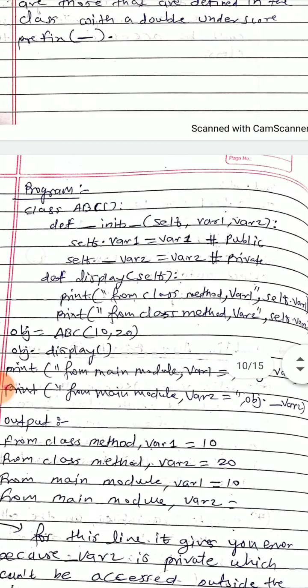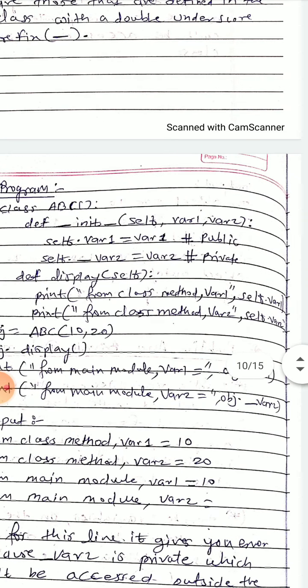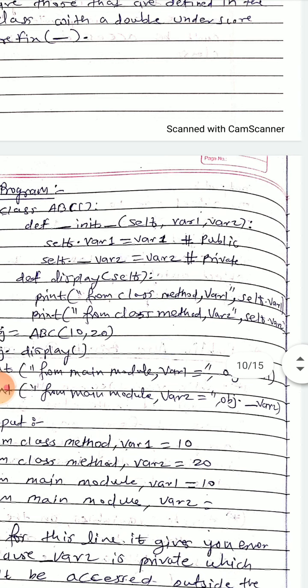Then we have created a display method. In that display method we print from class method var1, that is self.var1, and from class method var2, that is self.__var2.